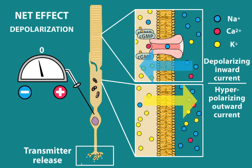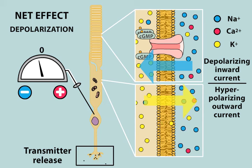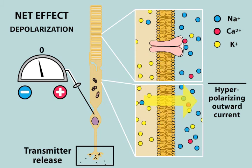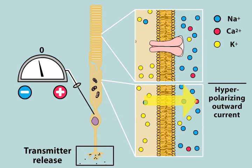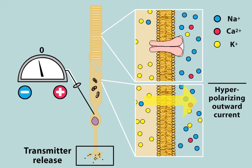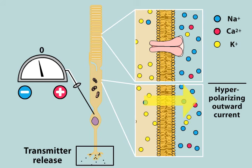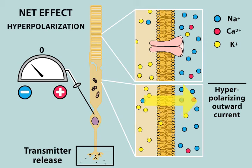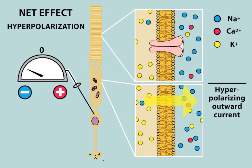Absorption of light reduces the concentration of cyclic GMP in the outer segment, leading to the closure of the cyclic GMP-gated channels. As a result, positive charge carried by potassium ions flows out of the cell more rapidly than positive charge carried by sodium and calcium ions flows in. The cell becomes hyperpolarized, that is, more negative, and decreases its release of transmitter.